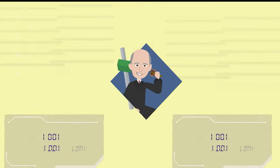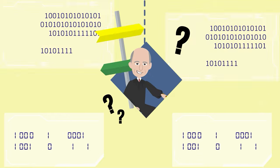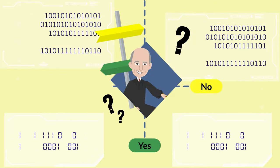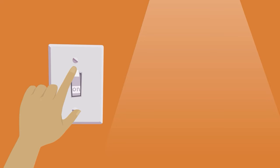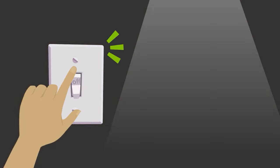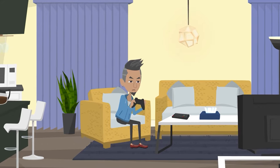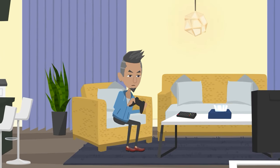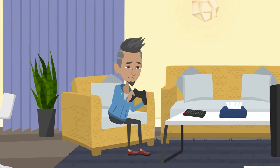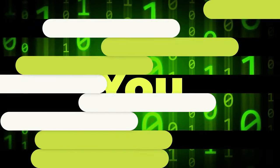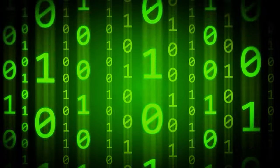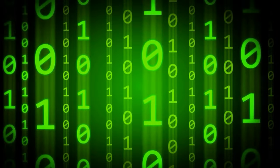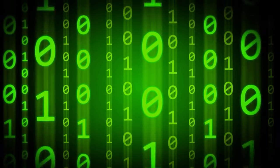Booleans — bool. These are the decision makers, the umpires calling the shots. Whenever you toggle something on or off, or when a game decides if you won or lost, that's booleans for you. They work in binary — it's either this or that. No middle ground.